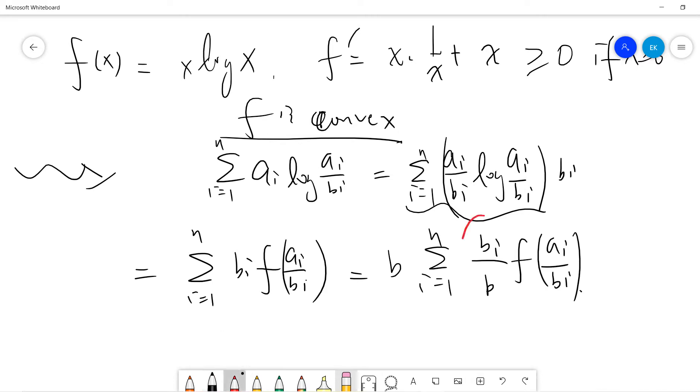Okay, so notice that now if you sum over bi/b from i=1 to n, which is 1. And also, this is a convex function. So here, due to Jensen's inequality,